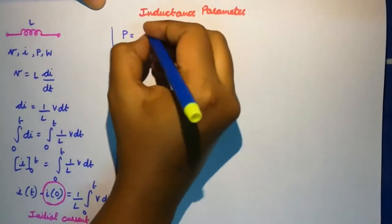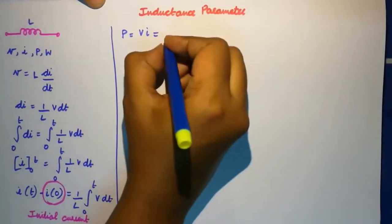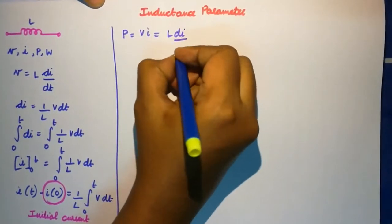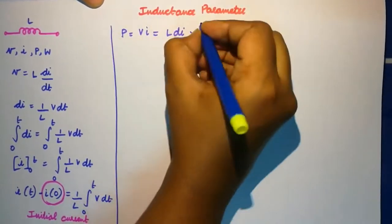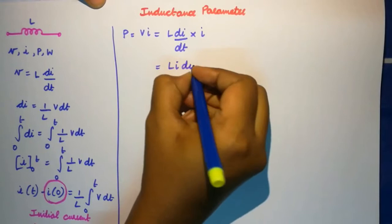Power is nothing but v into i. Now I have found out my v as L di by dt and I multiply it with i, so I'll get Li di by dt.